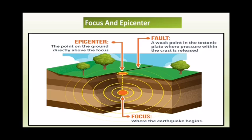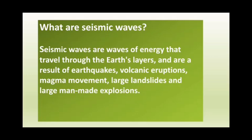When the tension is released at the focus, the released energy travels in all directions and comes toward the earth's surface in the form of waves. Seismic waves are waves of energy that travel through the earth's layers and are a result of earthquakes, volcanic eruptions, magma movement, large landslides, and large man-made explosions.